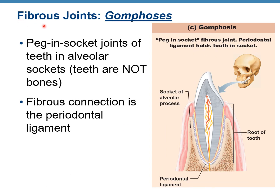The last type of fibrous joint is gomphosis, which is also very rare — the same as sutures, which are only in the skull. Gomphosis is the joint between teeth and sockets — alveolar sockets. Here is the alveolar socket in the maxilla or mandible, and the tooth fits inside the socket. There is a ligament connecting tooth to bone called the periodontal ligament. This is a type of gomphosis — a fibrous joint.